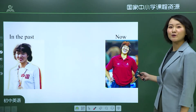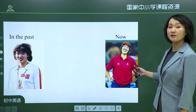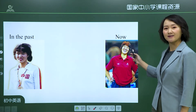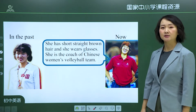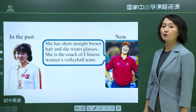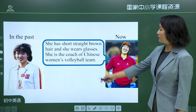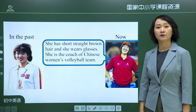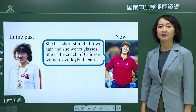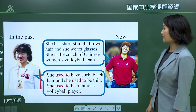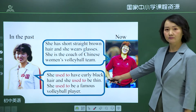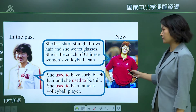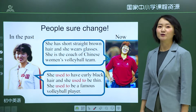Look at this picture. Who is she? She is Lang Ping, the coach of the Chinese women's volleyball team. She has short, straight, brown hair and wears glasses. This is a picture of her years ago — she used to be a famous volleyball player. In the past, she used to have curly black hair, and she used to be thin. From past to now, you can see people sure change.